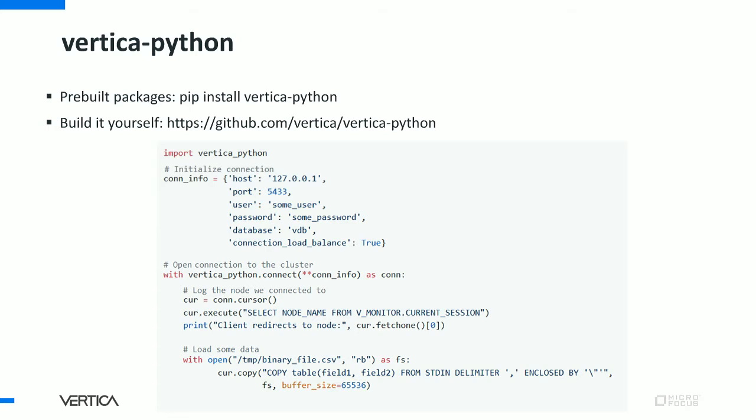Here's a little example of how you might use the Python client. We open a connection, run a query to find out what node we're connected to, and then do a little data load by running a copy statement. This is designed to have a familiar look and feel if you've ever used a Python database client before. We implement the DB API 2.0 standard, and it feels like a Python package — it's part of the centralized pip package manager, so you can just pip install this right now and go start using it.